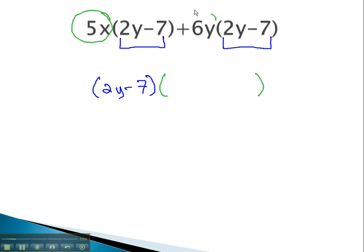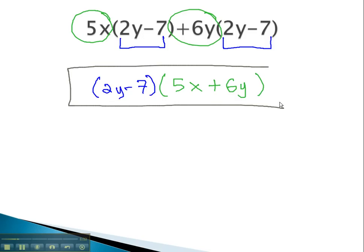There's a 5x and a positive 6y left in the expression. We have now factored out that greatest common factor to the front, giving us 2y minus 7 times 5x plus 6y.